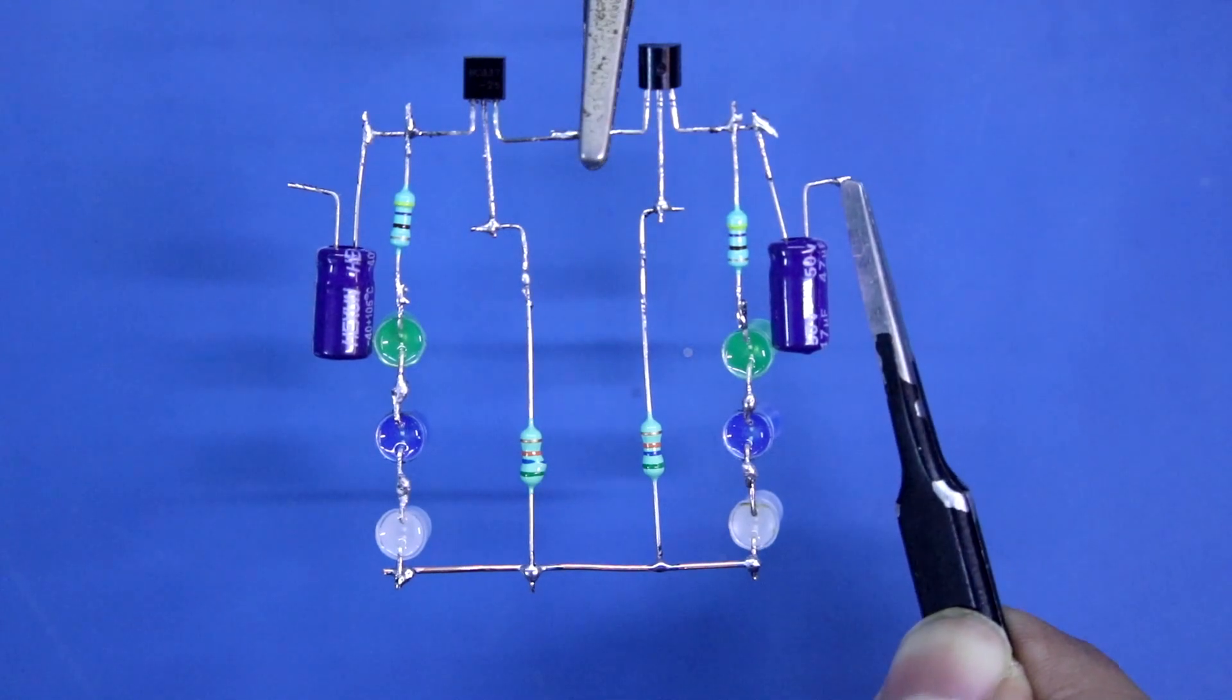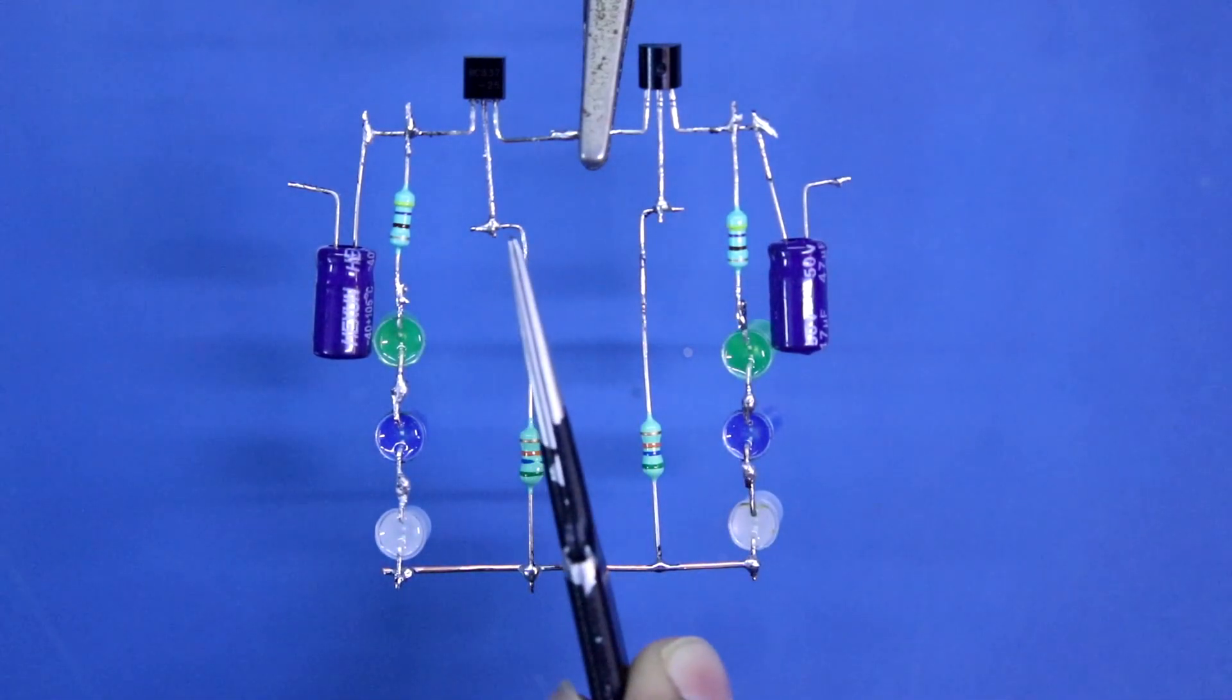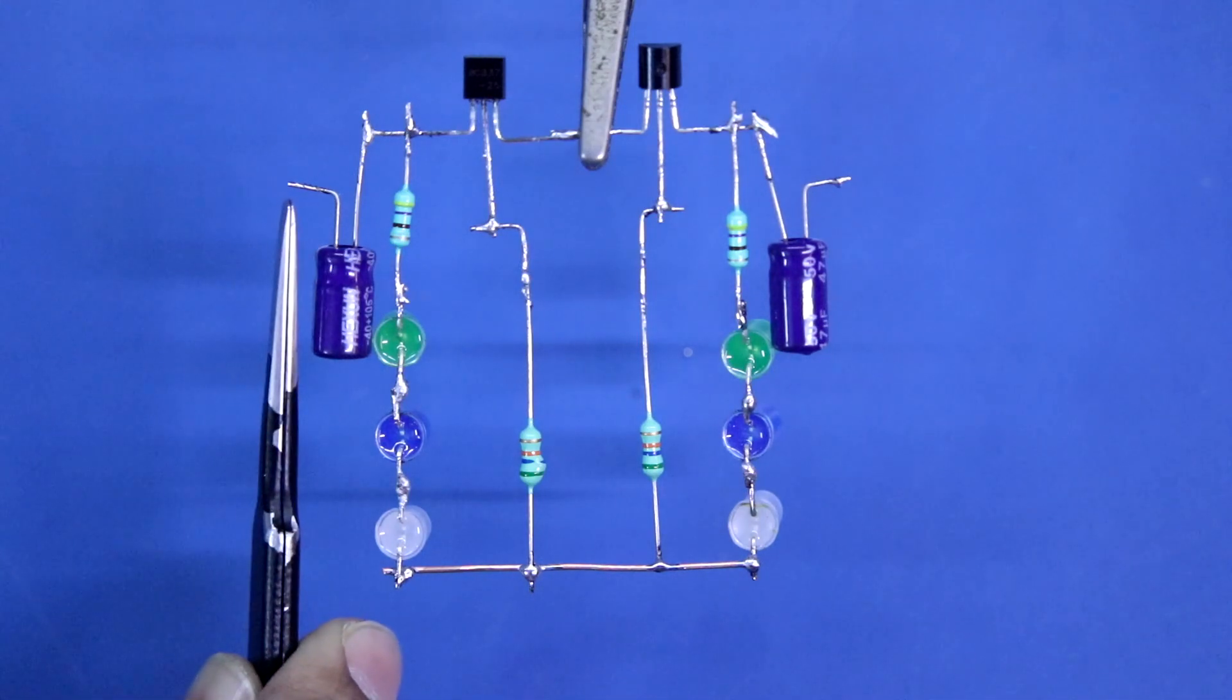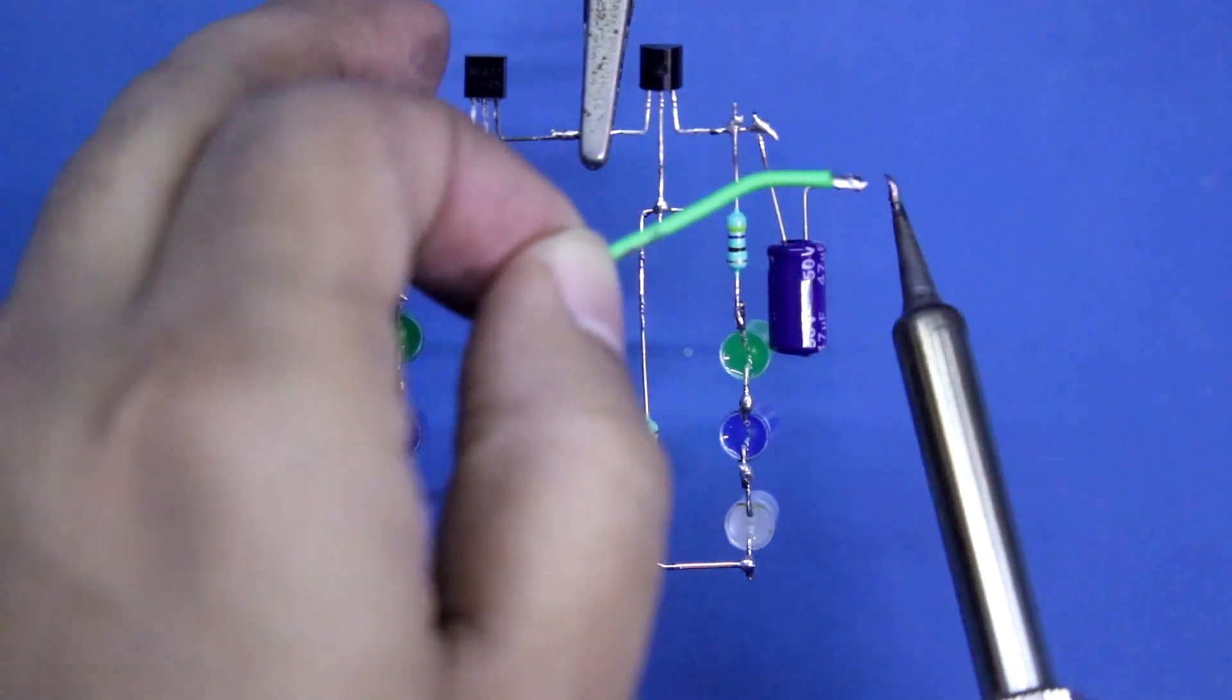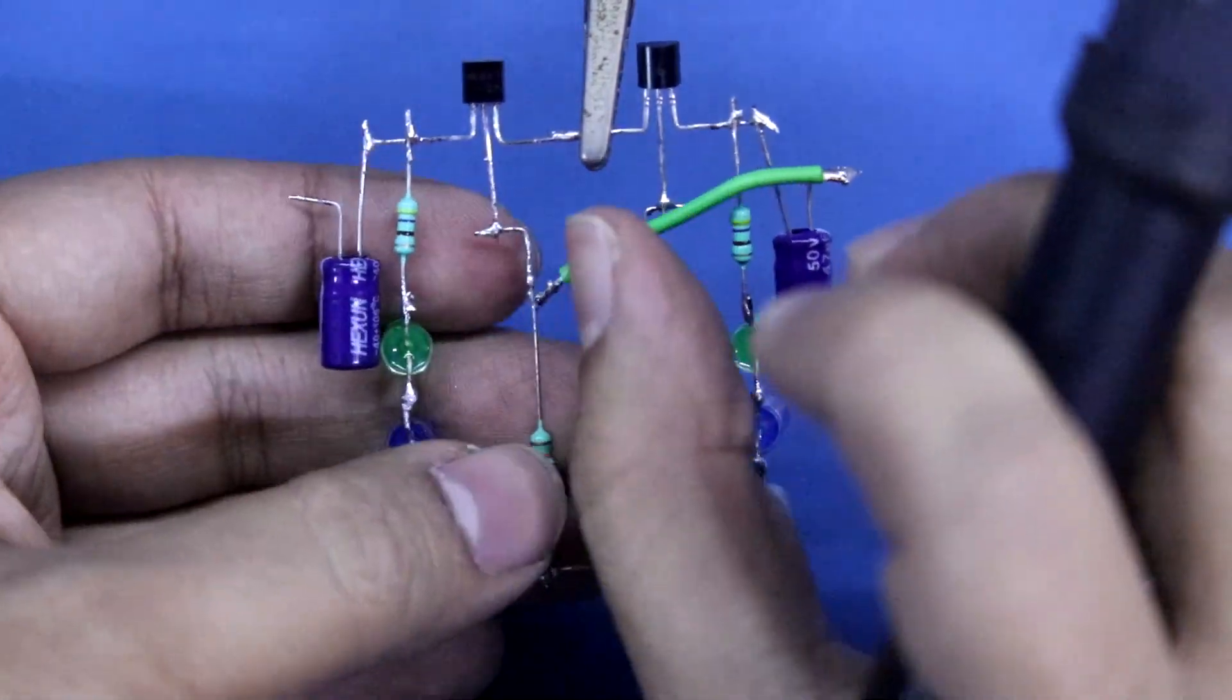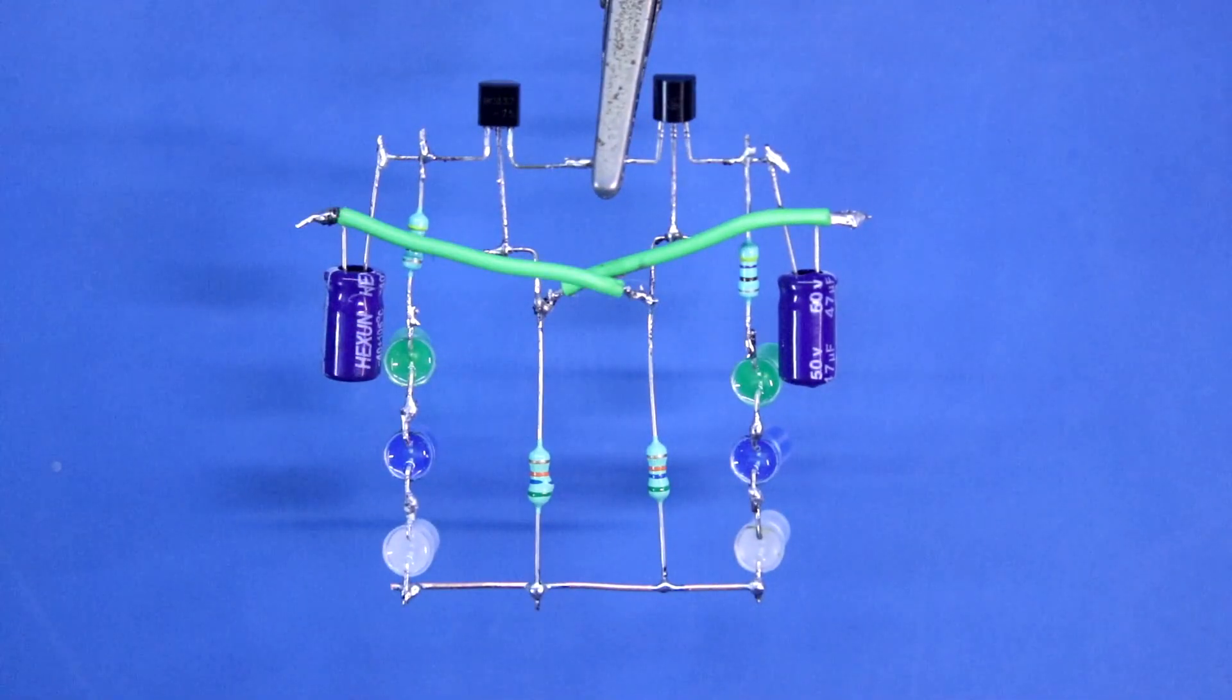Now this negative pin of the capacitor should be connected to this base of the transistor. And this negative pin should be connected to this base of the transistor. And with this connection we have completed our circuit.